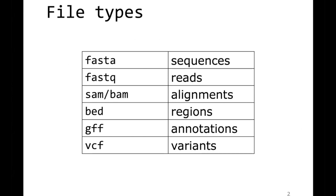Then the FASTQ file, where sequence reads are stored — the actual sequence of a read together with the base quality. Then the SAM/BAM format, where alignments are stored — we'll spend quite a bit of time on that because it's important and not super easy to understand. The BED file specifies regions in a genome. The GFF or GTF file stores annotations, and the VCF file stores variants — for example, SNPs and INDELs.